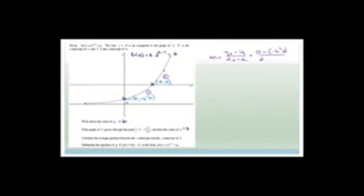Now finding the average gradient is super easy with two points: t is 2, 0 and p is 0, minus 4 and a half. M equals y2 minus y1 over x2 minus x1, so 0 minus minus 4 and a half over 2 minus 0. That's 4 and a half over 2, which is 9 over 2 divided by 2, equal to 9 over 2 times 2 over 1. Cancel, cancel, equals 9. So the average gradient from p to t is 9.